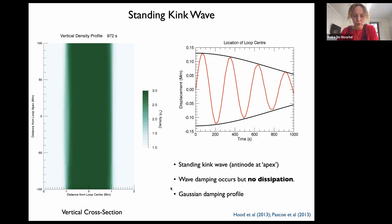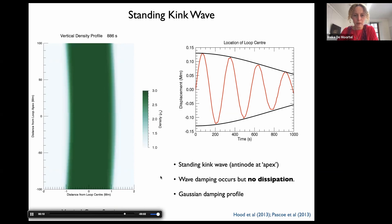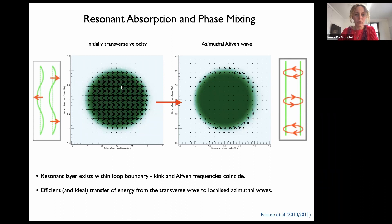To summarize: you start with an initial transverse velocity either at the apex of the loop in a standing mode, or at the boundary in a propagating mode. Through mode coupling or resonant absorption, you end up generating a very small-scale azimuthal Alfvén wave in the loop boundary. This is an ideal process — energy is transferred from one wave mode to the other, and there is absolutely no heating taking place.